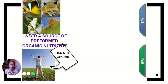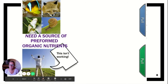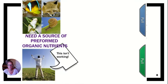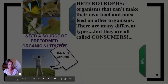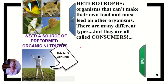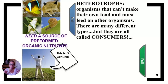We need a source of preformed organic materials — we can't just stand outside and want some energy. As heterotrophs, we can't make our own food, so we have to feed on other organisms. There are all different types of heterotrophs, but collectively they're called consumers. Another type of heterotroph that is not a consumer is a decomposer, and we'll be talking about those too.